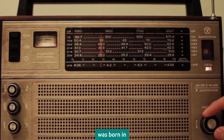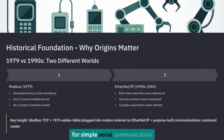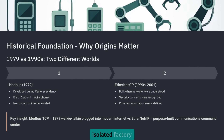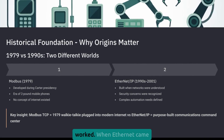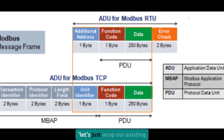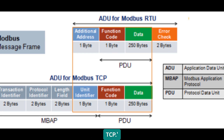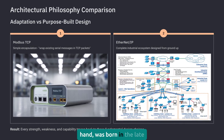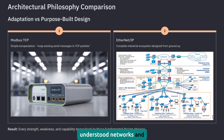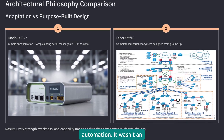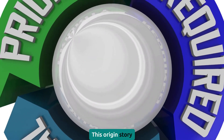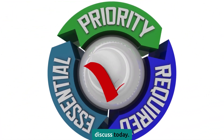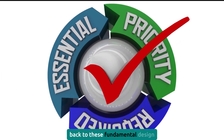Modbus was born in 1979, designed for simple serial communication between a few devices in an isolated factory environment. It was brilliant for its time — elegant, simple, and it worked. When Ethernet came along, someone said, let's just wrap our existing Modbus messages in TCP packets and call it Modbus TCP. EtherNet/IP, on the other hand, was born in the late 90s when we already understood networks and complex automation. It wasn't an adaptation — it was purpose-built for modern industrial networks. This origin story explains every strength and weakness we're going to discuss today.